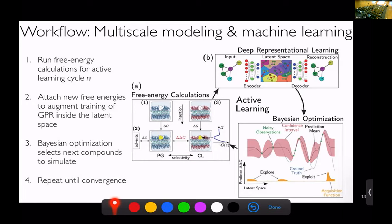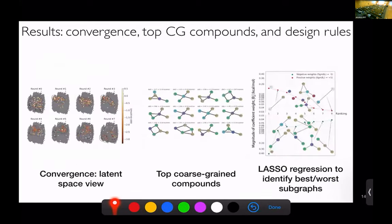On the left, this is showing the convergence in the latent space. These points are all the selectivity value, the delta-delta-G, at the different cycles for these different compounds in each cycle. These are all calculated, they're not predicted. From this, we can also identify the top coarse-grained compounds, the top performers, the ones that have the best selectivity. They're shown here at these graph-type things - they're coarse-grained molecules.